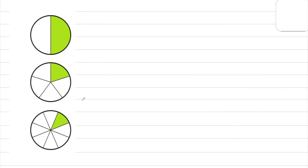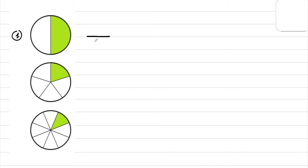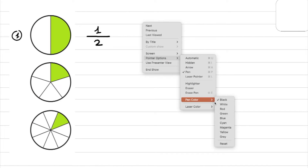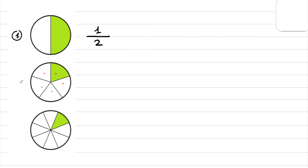Another example about fractions. In the first exercise, I have only 2 parts — this side and this one. The total is 2, and we have only 1 part in the shaded region, so we have 1 over 2 for this circle. The second one has 5 parts in total, and only 1 part is shaded, so 1 over 5. And the last one has 8 parts, and 1 part for shaded, so 1 over 8.